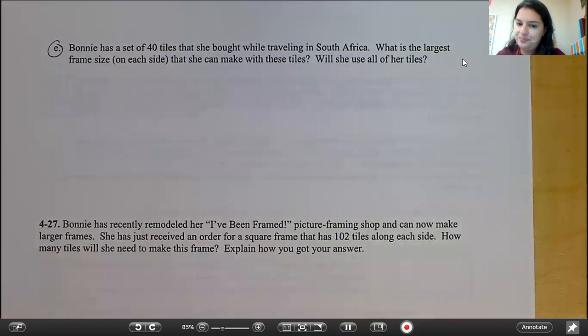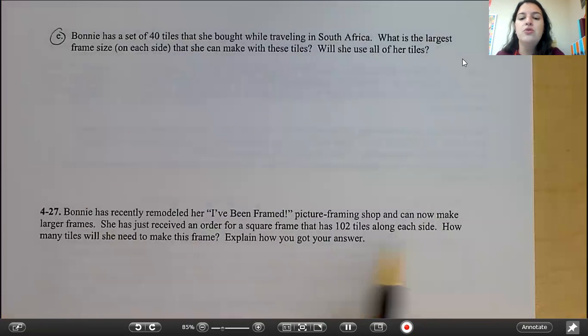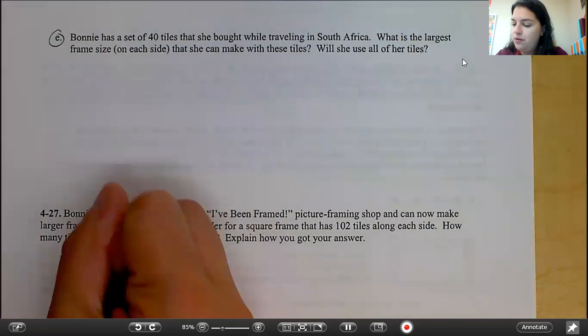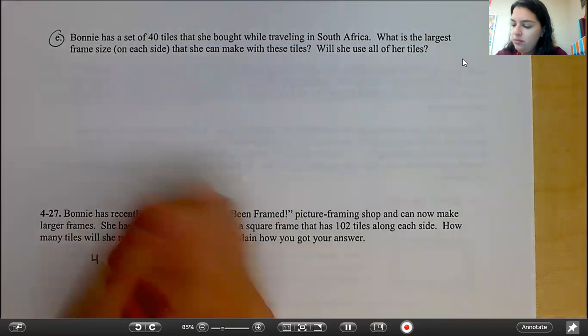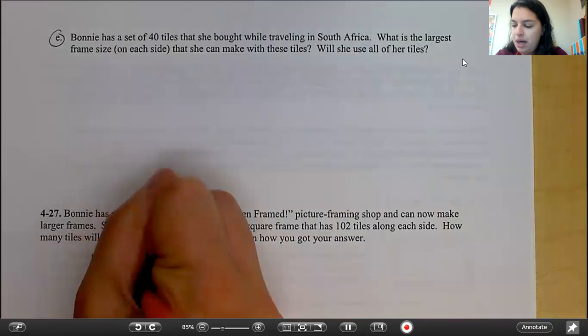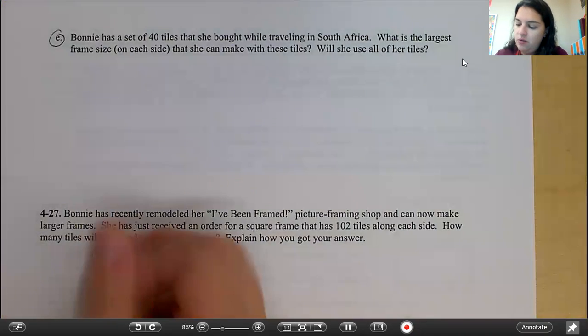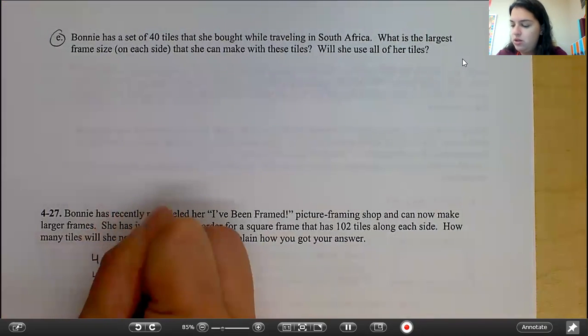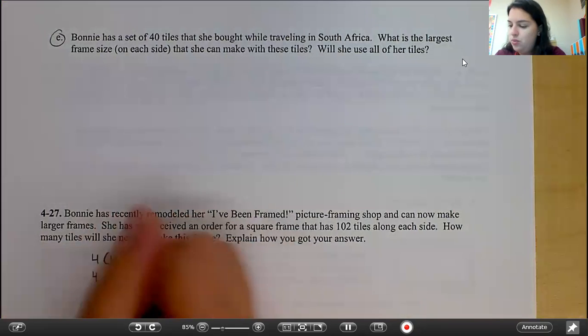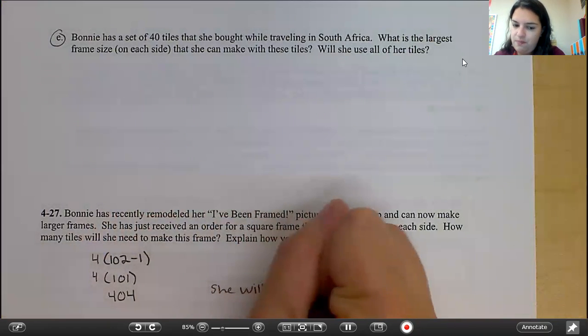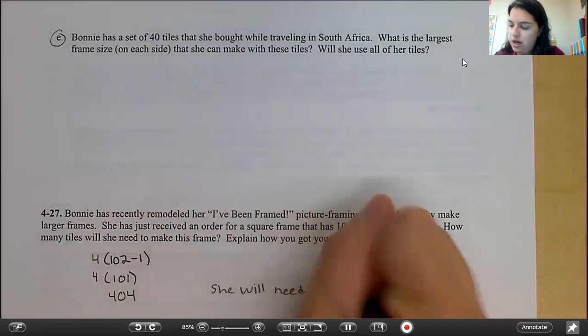Okay, so let's take a look at this one. You needed to use one of the methods from the other framing questions to answer this question. So if there were four sides, 102 tiles total minus one for each corner. Now we can solve this. 4 times 101, because 102 minus 1 is 101, would give us 404. Therefore, she will need 404 tiles for the frame.